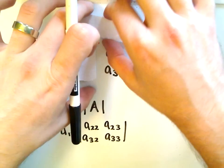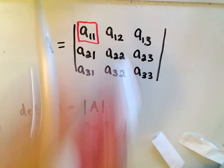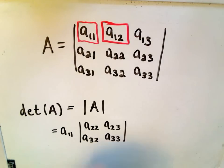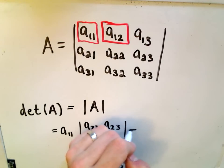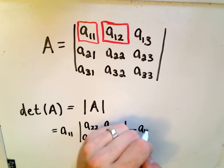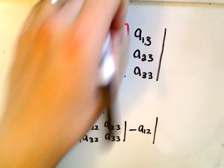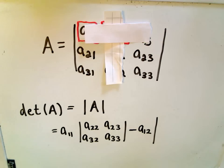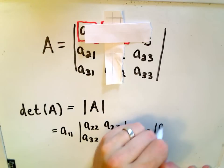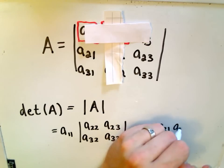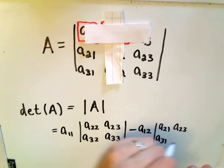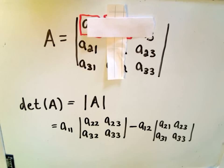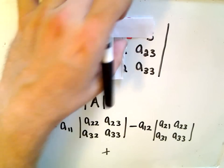Now we do the same thing - we look at the same row but move over. It turns out you have to change the sign, so it's minus A₁₂. If I cover up that column and that row, I'm left with A₂₁, A₂₃, A₃₁, and A₃₃. Looks like I'm running out of room here.